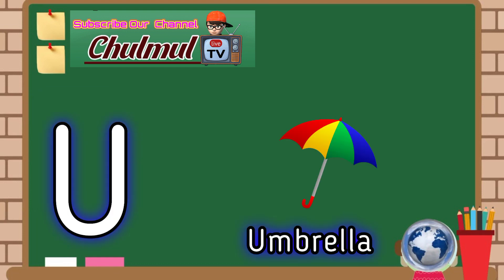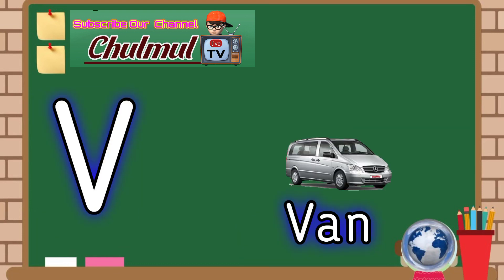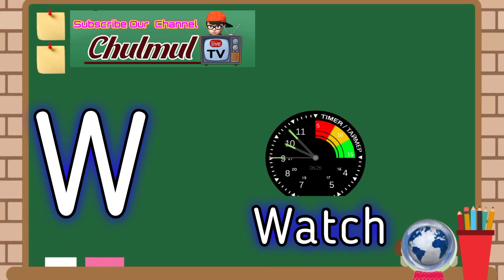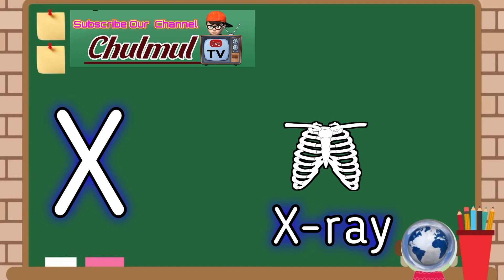U for umbrella, V for van, W for watch, X for x-ray.